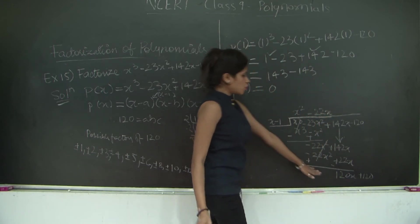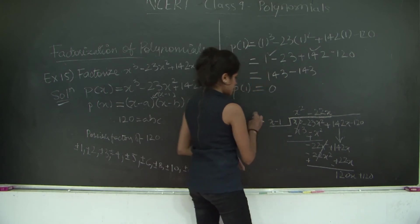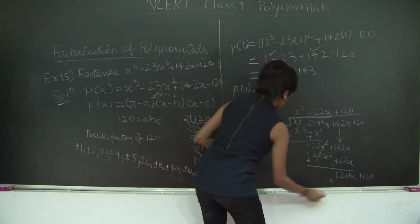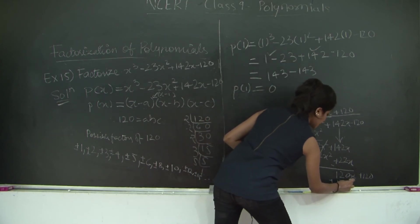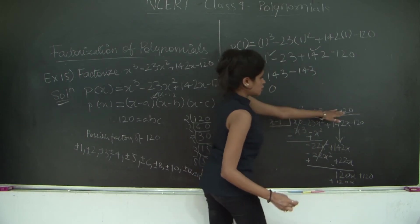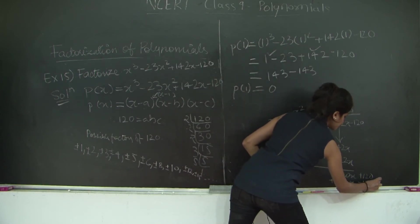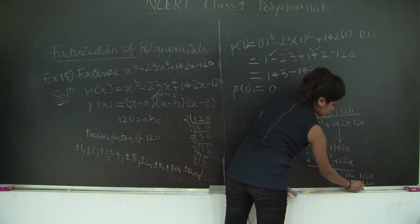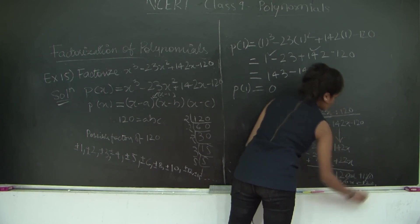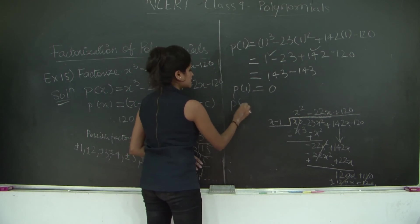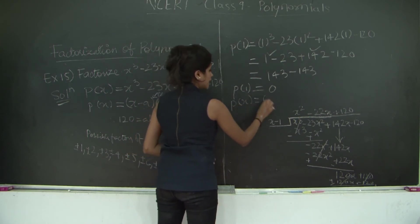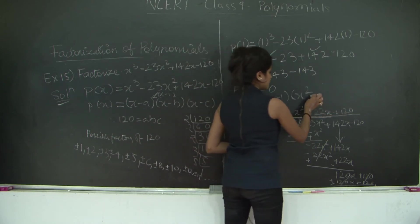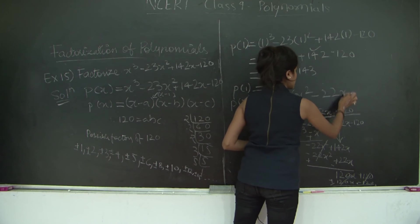So x - 1 times what will give me 120x? +120x. Minus 1 times 120 will give me -120. When you subtract, you get the remainder as 0. Therefore, your polynomial p(x) can be written as (x - 1) times this quotient, which is x² - 22x + 120.